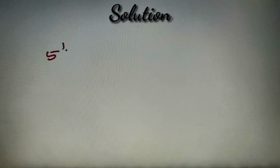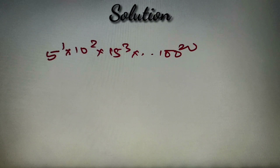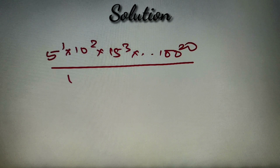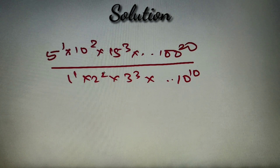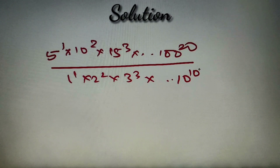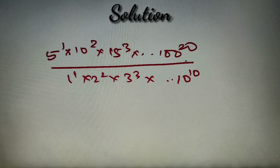According to our given question, we have 5 raised to power 1, into 10 squared, into 15 cubed, all the way up to 100 raised to power 20 in the numerator, divided by 1 raised to power 1, into 2 raised to power 2, into 3 raised to power 3, all the way up to 10 raised to power 10. We have to find the number of trailing zeros — that is, zeros at the end of this number. The number of trailing zeros is determined by the powers of 2 and 5.